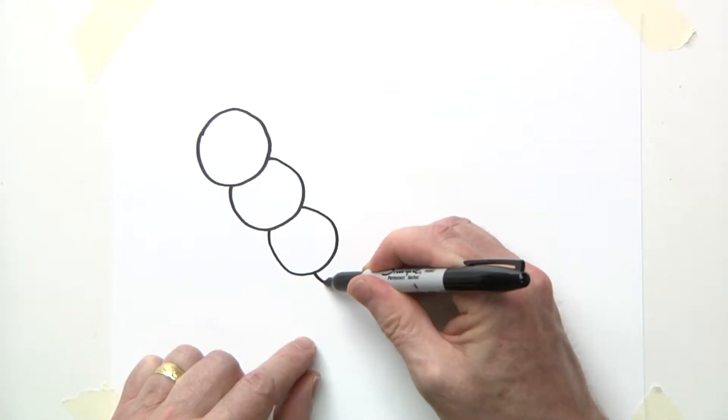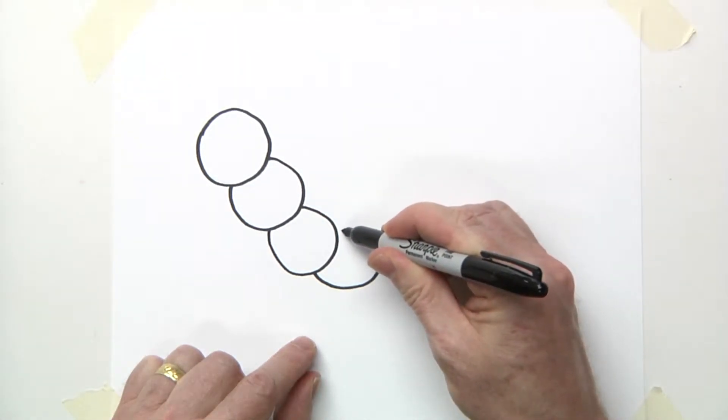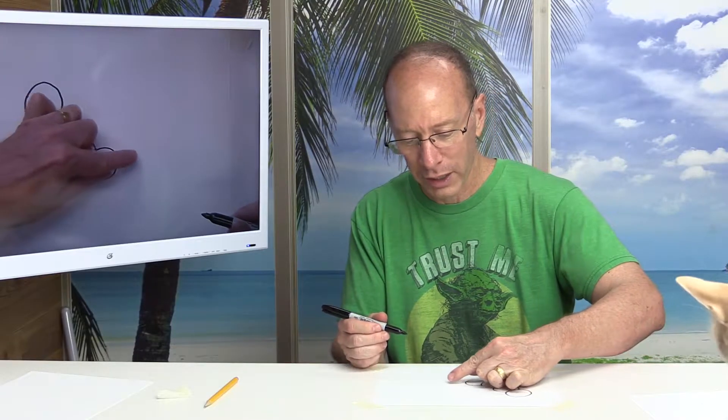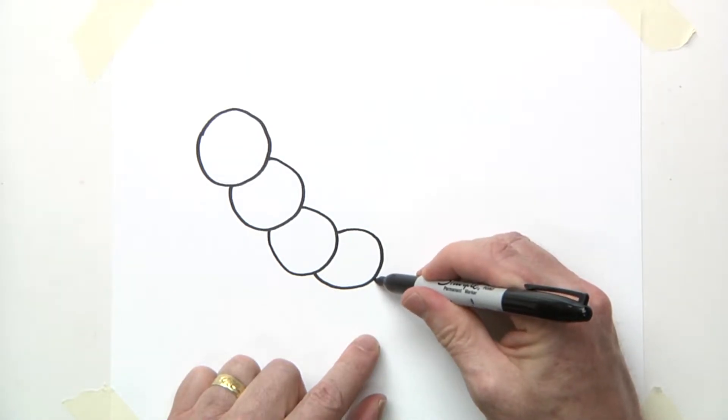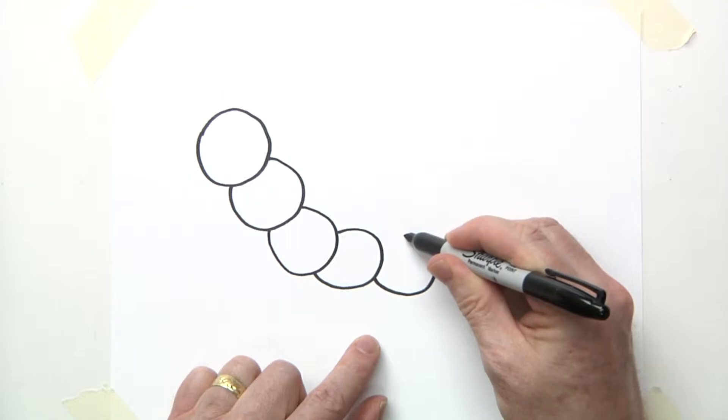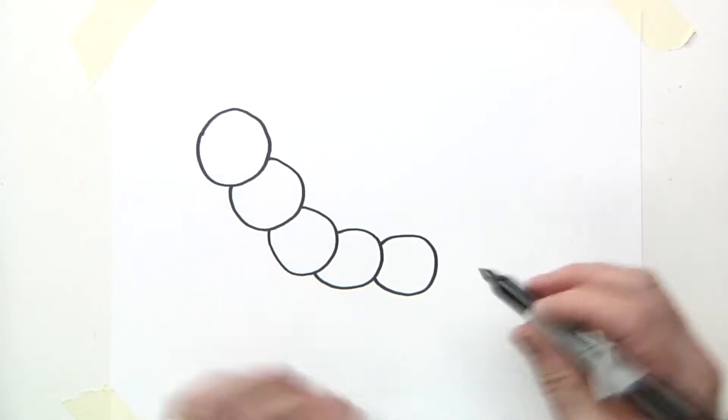So let's go ahead and draw another one. And as you could see, I'm starting to go down and now going horizontal. So now I'm going to draw another one. All the circles should be about the same size. If they're a little squished, that's okay.